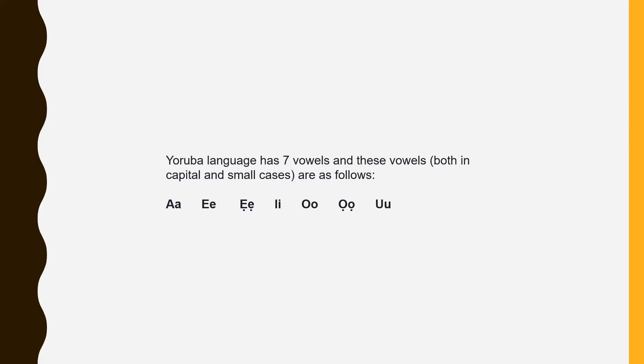Yoruba language has seven vowels, and these vowels, both in capital and small cases, are as follows: A, E, Ẹ, I, O, Ọ, U.